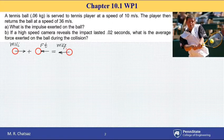Here we have a tennis ball with a mass of 60 grams that is served to a player with a speed of 10 meters per second. The player then returns the ball with a speed of 36 meters per second as shown.